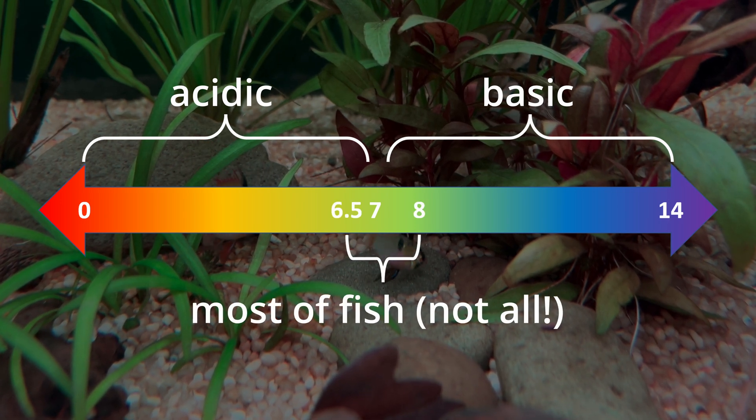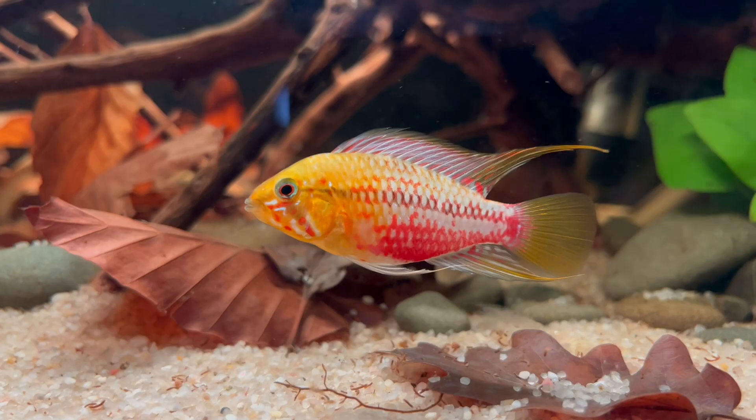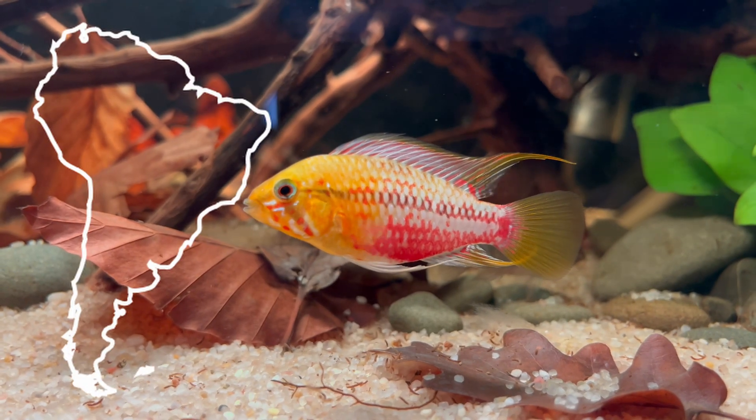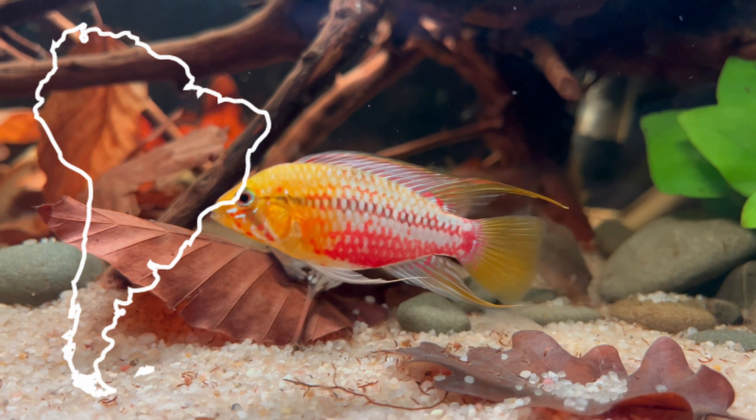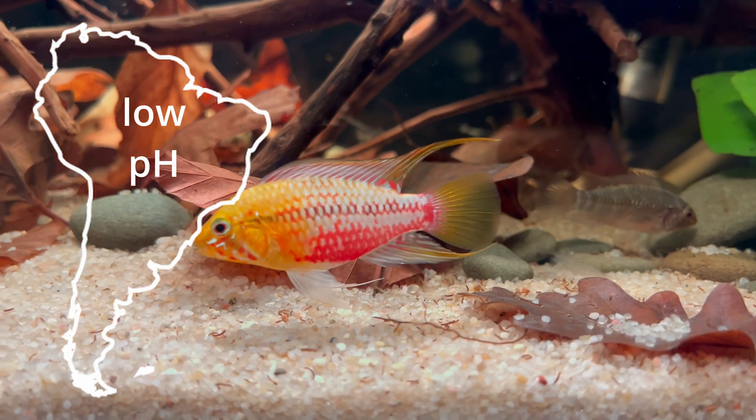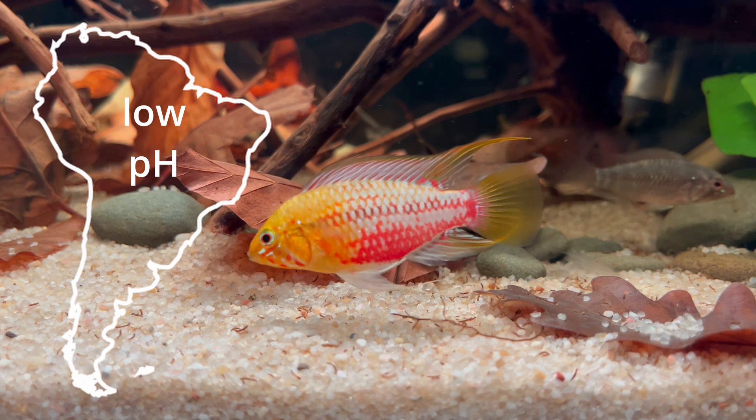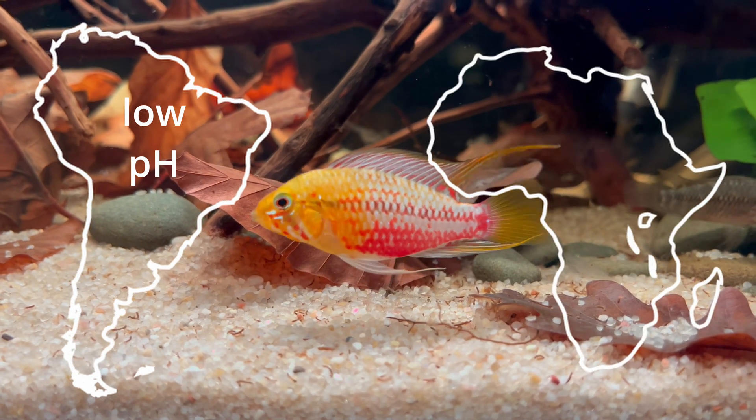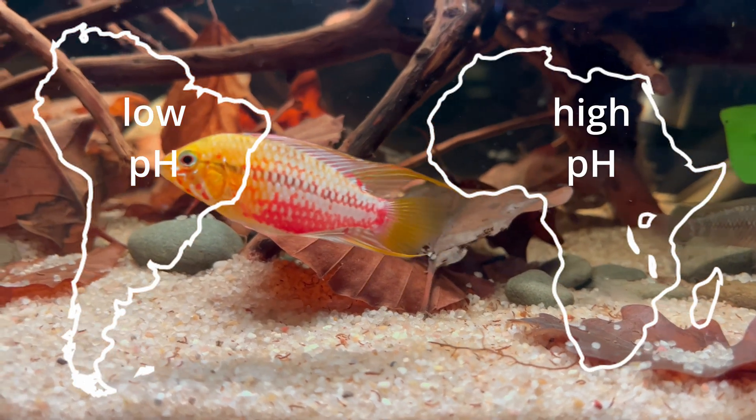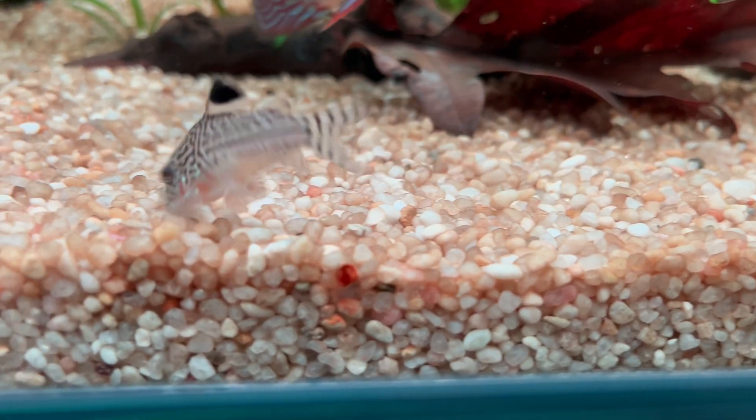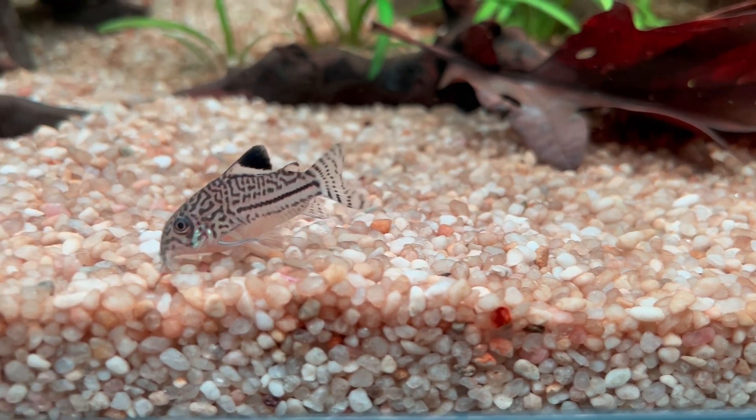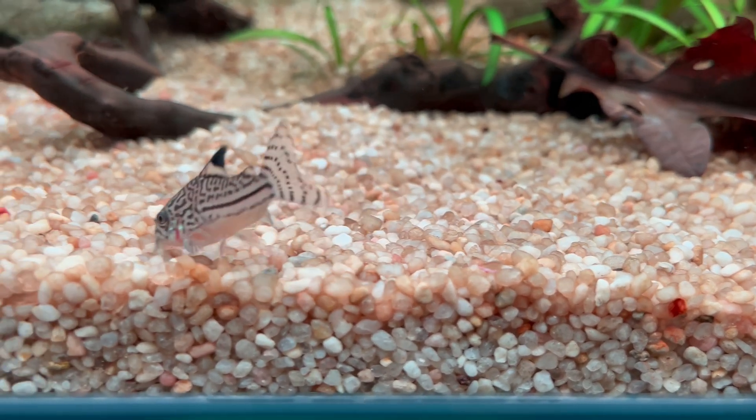Of course, it strongly depends on the species of the fish that you keep. So if your fish is from South America, there is a good chance that it prefers lower pH, even lower than 6.5. And fish from Africa tend to like higher pH, even above 8. But in general, the range of pH that fish tolerate is actually quite high.